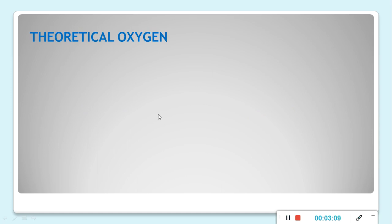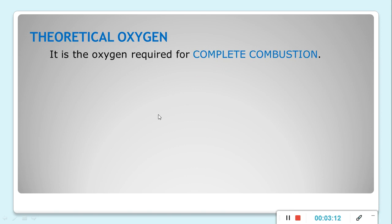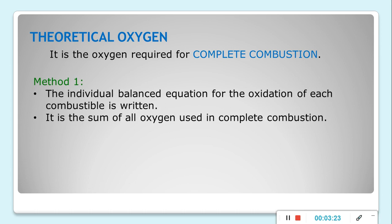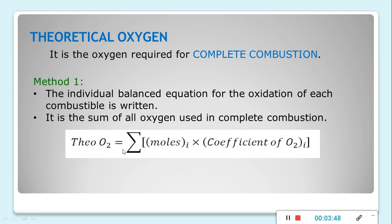Theoretical oxygen is the oxygen required for complete combustion — remember, it is for complete combustion only. We have two methods to compute for theoretical oxygen. Method 1: the individual balanced equation for the oxidation of each combustible is written, and theoretical oxygen equals the sum of the product of moles and the coefficient of oxygen.